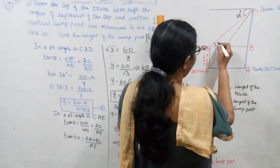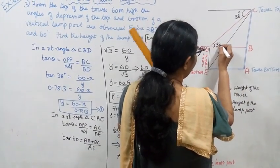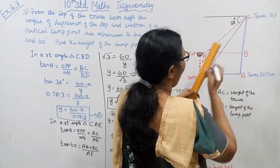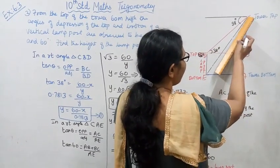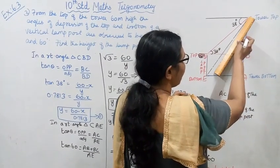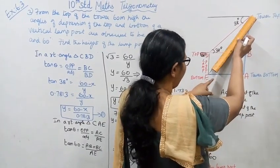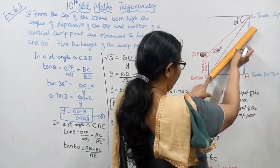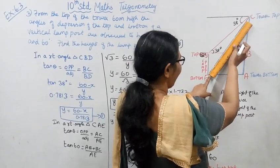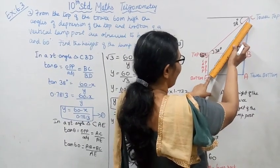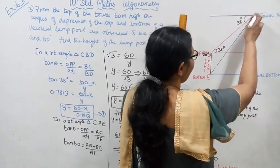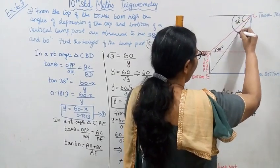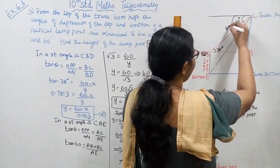The angle of depression to the top of the lamp post is 38 degrees. The angle of depression to the bottom — the full line — is 60 degrees.